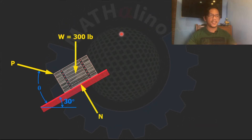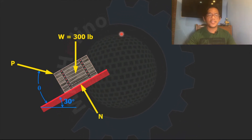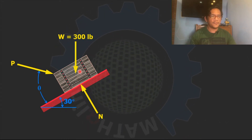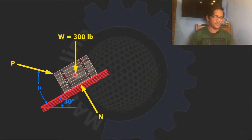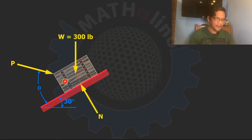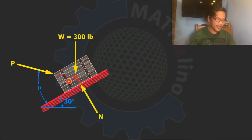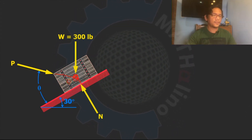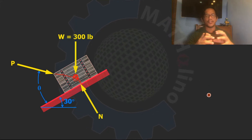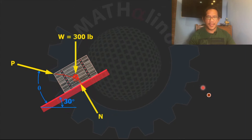Remember the basic principle of mechanics: if we have three forces that are in equilibrium, they are concurrent, provided that those forces are not parallel. So if these three forces are in equilibrium, they are concurrent at this point. To draw the free body diagram, let us consider the box as a particle — we squeeze that box — and this point is the point of concurrency.